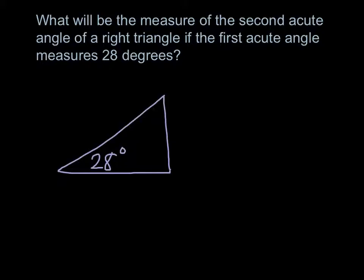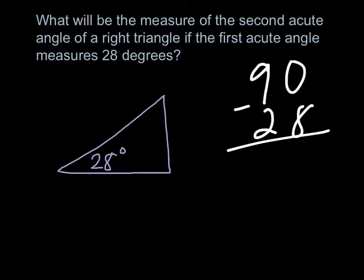To solve this question, you're going to do 90 minus 28, which gives you 62 degrees. That is your final answer: 62 degrees.